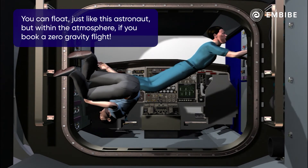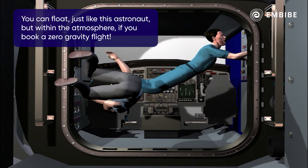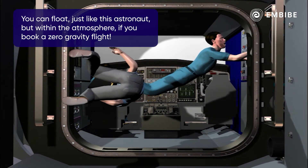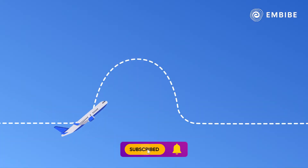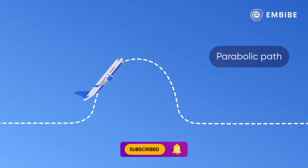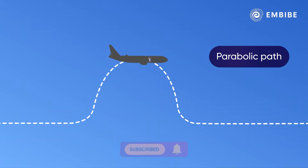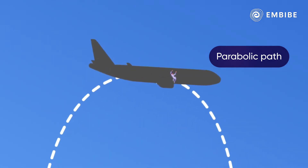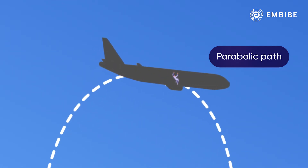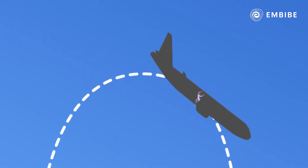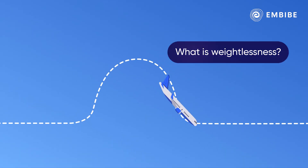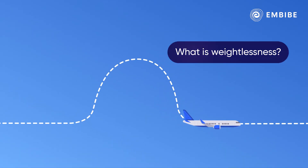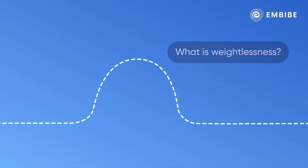Such a flight is known as a zero gravity flight. In this flight, the plane flies in a long parabolic path to simulate zero gravity or weightlessness inside the cabin. What is this weightlessness that you experience? Let's find out.